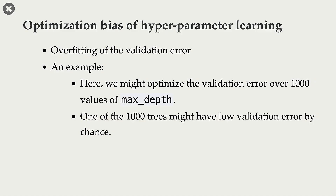One of these trees might have low validation error just by chance. But when you use that particular hyperparameter value, train a model on the full training set, and try it out on the test set, you realize that your model is not really generalizing well. So the cross-validation error that you got is not consistent with what you get on the test set — the cross-validation error is not representative of the test error. That is overfitting of the validation error.